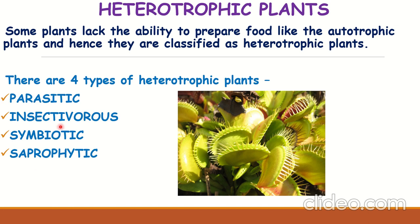In today's video we will be exploring heterotrophic plants. Some plants lack the ability to prepare food like autotrophic plants and hence are classified as heterotrophic plants. Some plants cannot prepare their own food, so they depend on other organisms for food, just like we do. Such plants are called heterotrophic plants. There are four types: parasitic, insectivorous, symbiotic, and saprophytic. In this video we'll cover parasitic and saprophytic plants; the next video will deal with insectivorous and symbiotic plants.